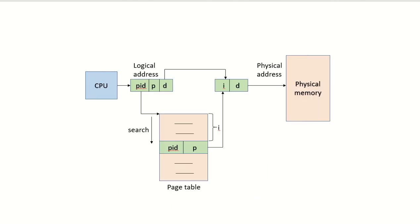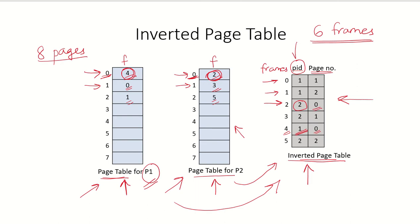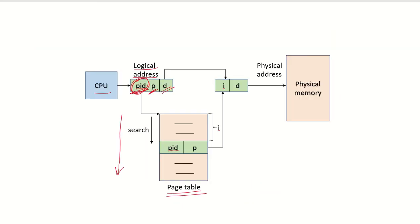For address translation, the CPU generates a logical address containing the process ID, the virtual page number, and the offset. The process ID is used to search the inverted page table — checking entries to find where that process ID is available. Once the process ID is found, there could be multiple entries, so the page number must also be checked to confirm it matches the virtual page number in the entry.